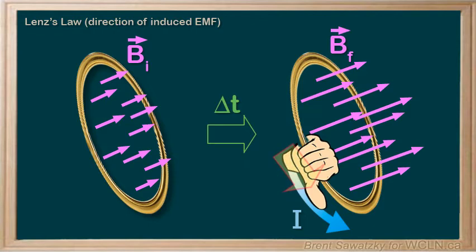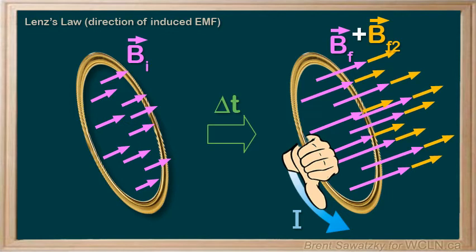Right-hand rule. And our thumb is in this direction, in the direction of the current, and our fingers would curl around the conductor like this. And we can see that our fingers and induced magnetic field would be going to the left on the outside of the loop, and to the right as it passes through the middle of the loop. So, our induced magnetic field would add to our increasing magnetic field, BF, and make it increase even more.